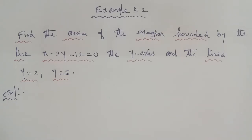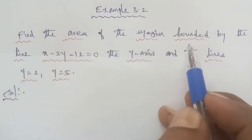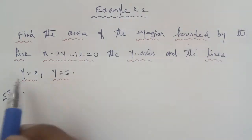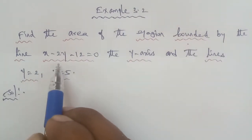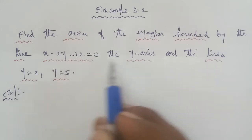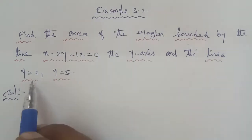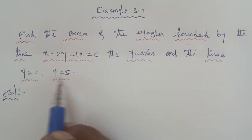Hi students, I am Gopinath. 12th max, exam 3.2: find the area of the region bounded by the line x minus 2y minus 12 equal to 0, the y-axis, under the line y is equal to 2 and y is equal to 5.